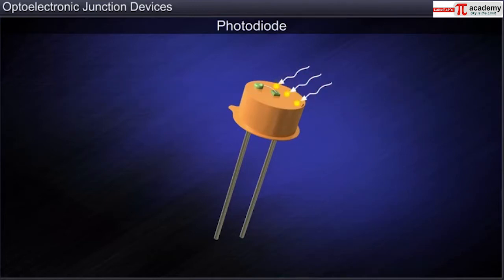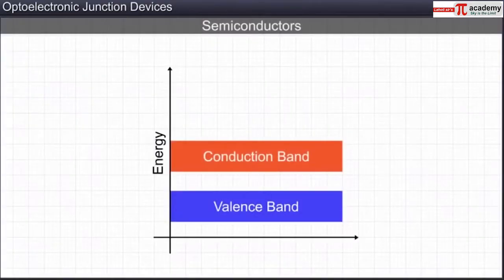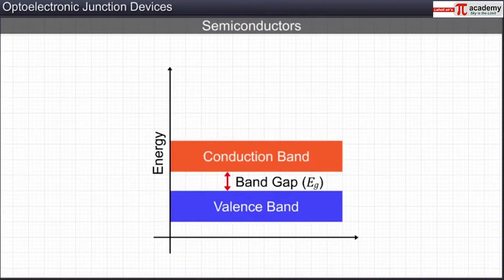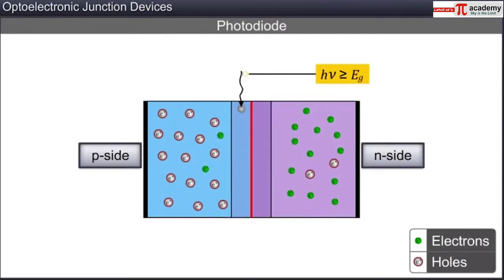We know that light consists of tiny bundles of energy called photons, whose energy in turn depends on the frequency of the light. We also know that electrons in the semiconductor atoms of a diode need to overcome an energy gap to become free and create electron-hole pairs that act as charge carriers in the diode. When photons of light with energy greater than the energy gap fall on the diode, the photons get absorbed by the semiconductor atoms leading to the creation of electron-hole pairs in the diode.